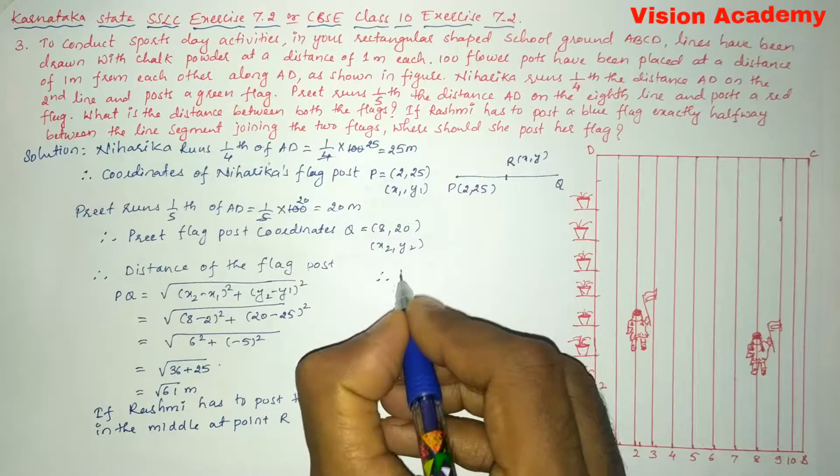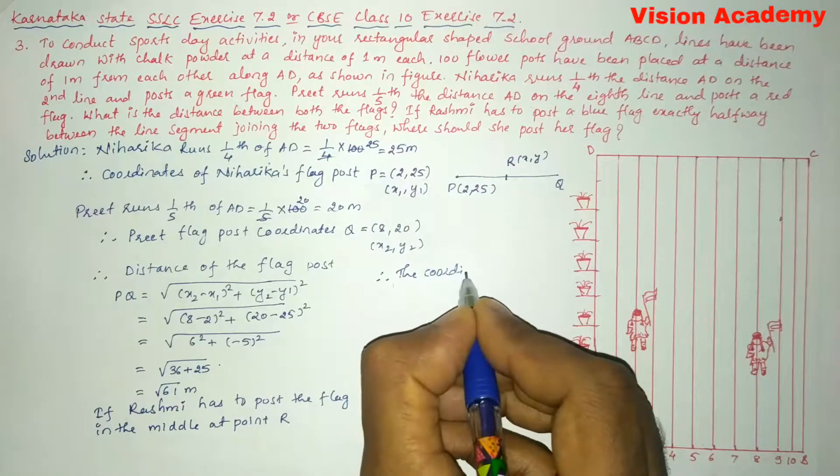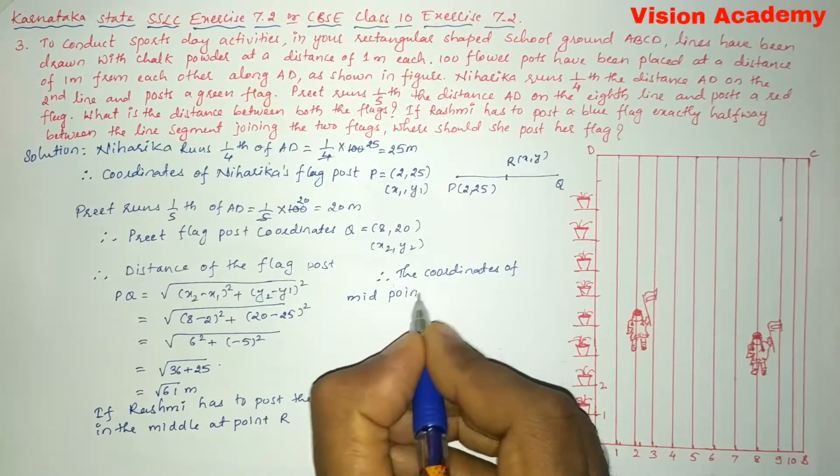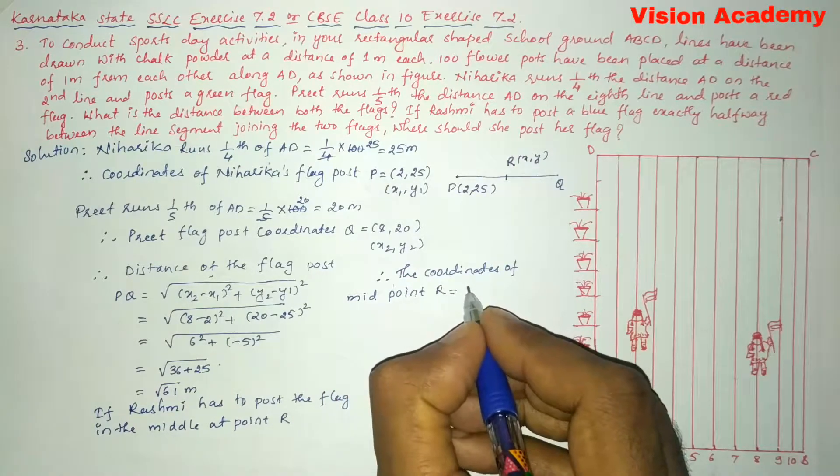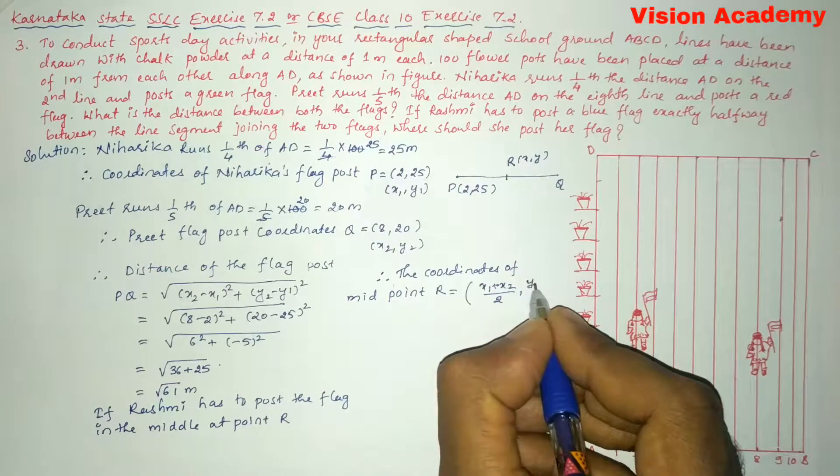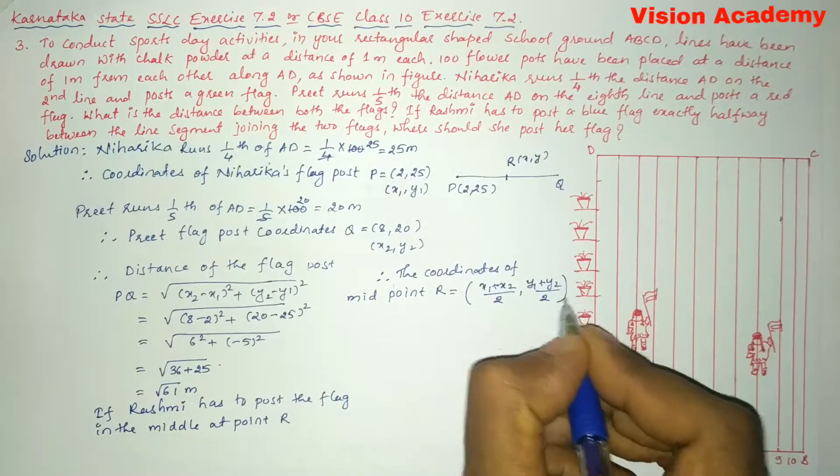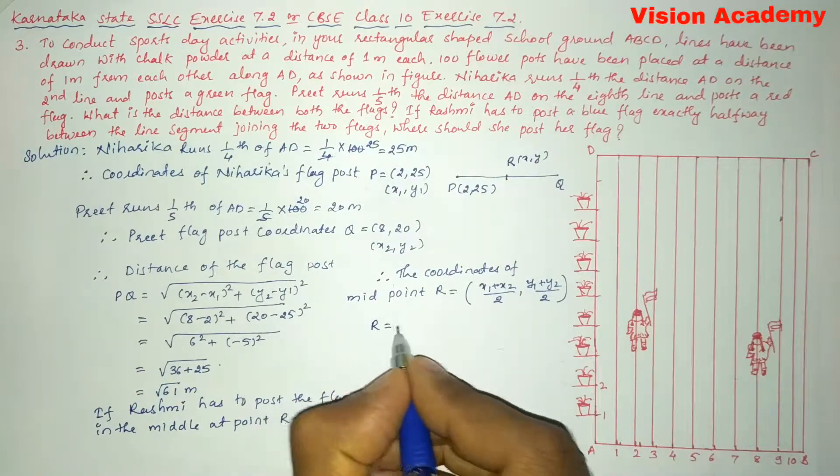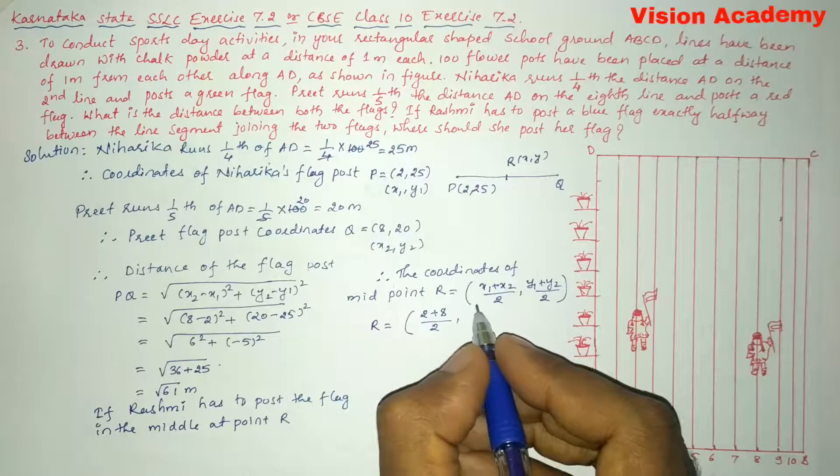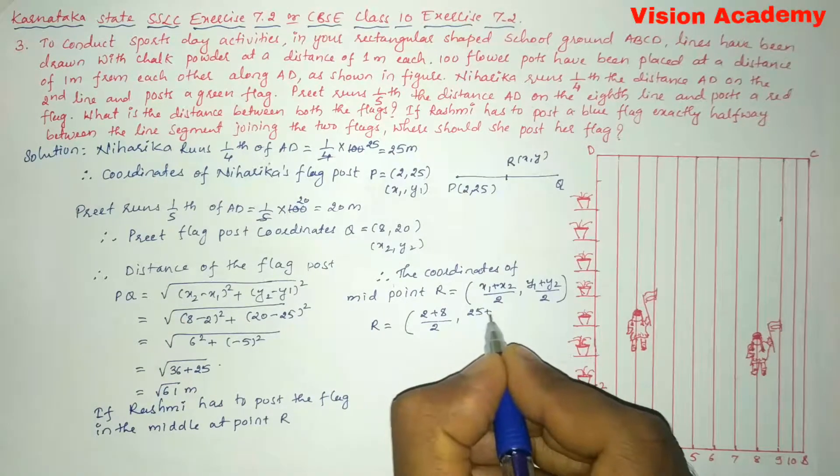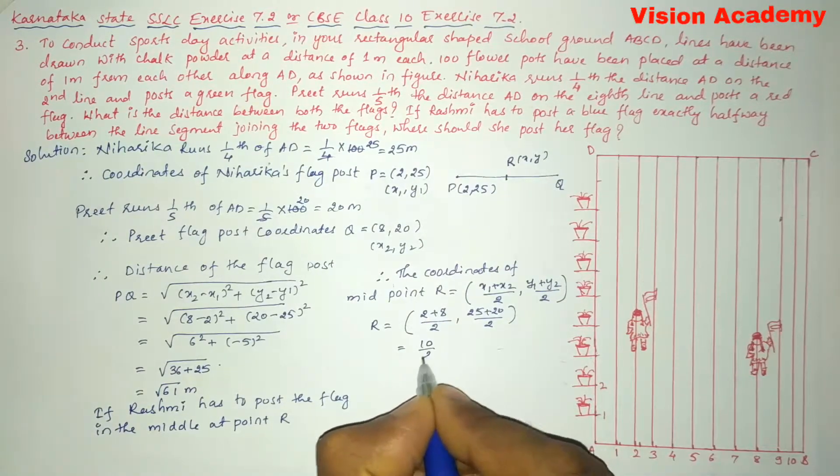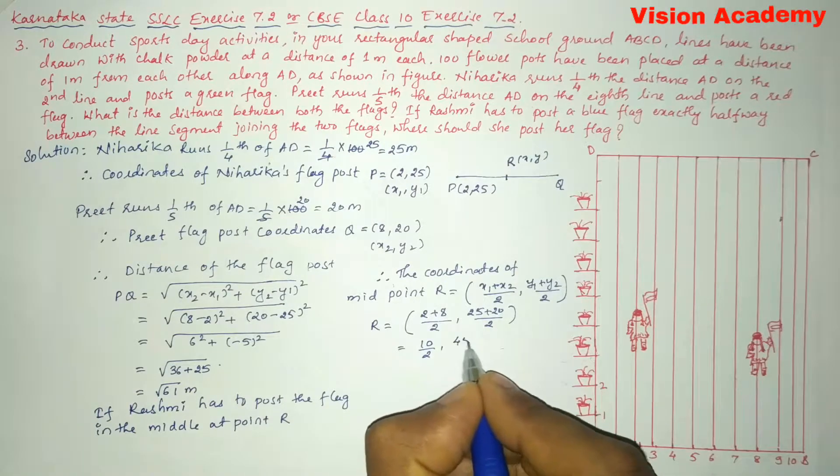Therefore the coordinates of midpoint R is equal to, we know the formula, that is (x1 plus x2) divided by 2 and (y1 plus y2) divided by 2. So midpoint R is equal to (2 plus 8) divided by 2 and (25 plus 20 is 45) divided by 2.